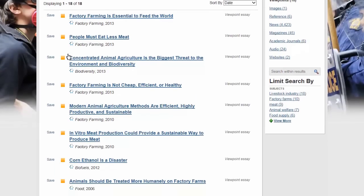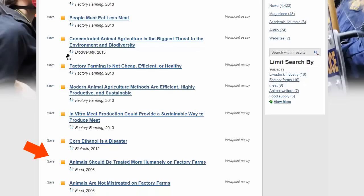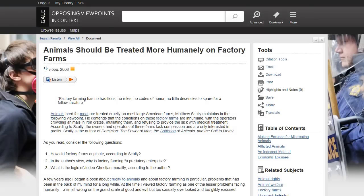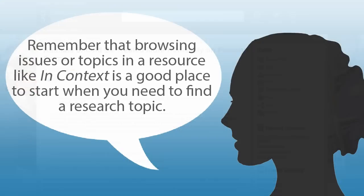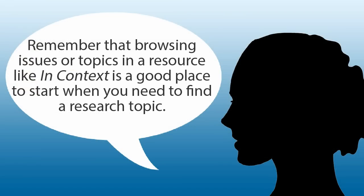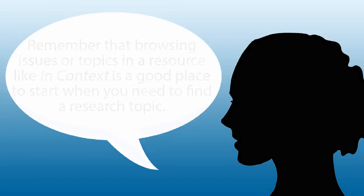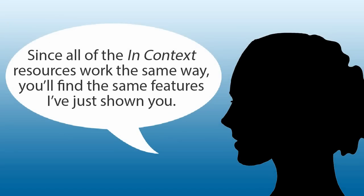Look, there's a viewpoint article on treating animals on factory farms humanely. This is great! You know, I think you may have your topic. Remember that browsing issues or topics in a resource like In Context is a good place to start when you need to find a research topic. Since all of the In Context resources work the same way, you'll find the same features I've just shown you. Good luck on your paper!